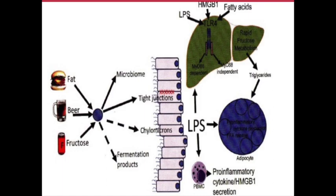On this slide, we can see that eating fat, beer, and fructose result in a number of changes in the gastrointestinal tract, which result in the release of LPS, which is endotoxin. This, in turn, causes changes in the liver and how it metabolizes fat, and this, in turn, results in inflammation, and then we get, in some patients, fatty liver disease. You must remember that eating fat, beer, and fructose does not cause everyone to have fatty liver disease, but it is a contributing factor.